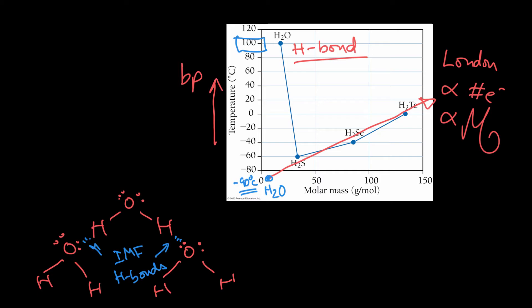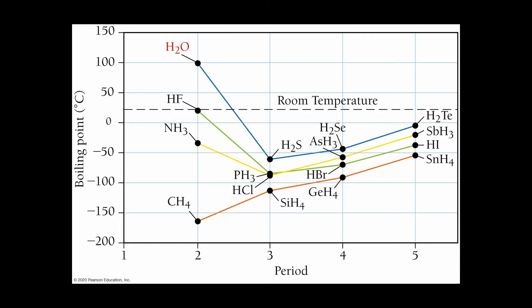You might say, well, what about the other hydrogen compounds? So let's draw those up. If I look at the group four hydride - carbon, silicon, germanium, and tin -